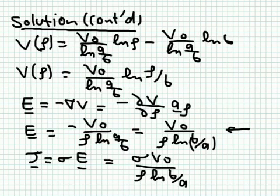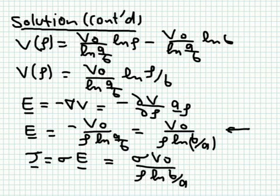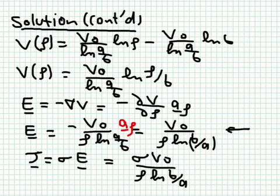Once we have the potential, we calculate the electric field E = −∇V. Since V is only a function of ρ, the gradient has only the rho-component: E = −∂V/∂ρ · ρ̂. Differentiating, and accounting for the negative sign (since ln(A/B) is negative), we get E = [V₀ / (ρ · ln(B/A))] · ρ̂. The electric field varies as 1/ρ, with constant V₀ / ln(B/A), and we now know E at any point between the hole and the rim.